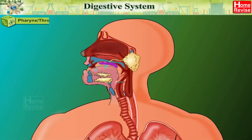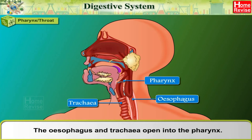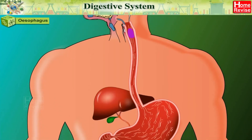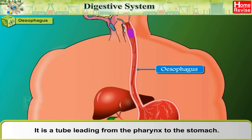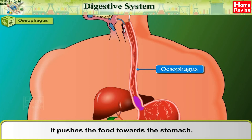Pharynx: The pharynx, or throat, is the point where the esophagus and trachea open. Esophagus: The esophagus is a tube leading from the pharynx to the stomach; it pushes the food towards the stomach.